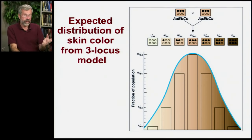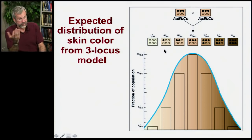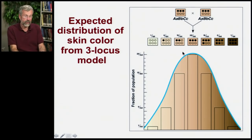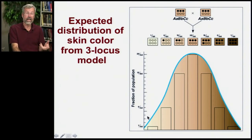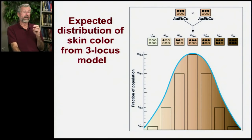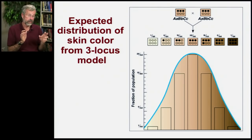If we had three loci, you have 64 possibilities, and again the most common thing is the average. Here is a bell curve on a three-locus model for skin color. It turns out traits like height and skin color are influenced by genes at multiple loci — probably even more than three or four.